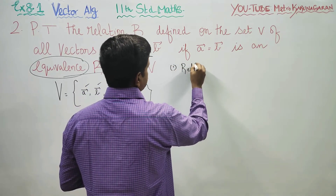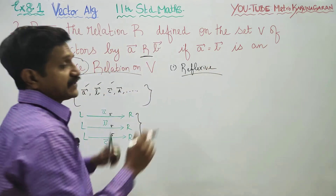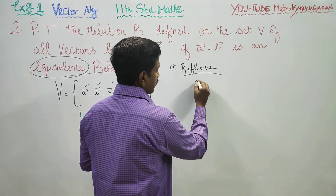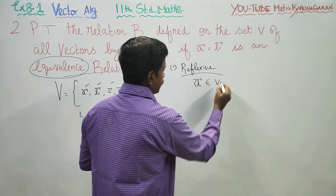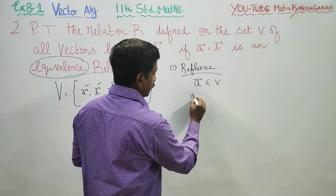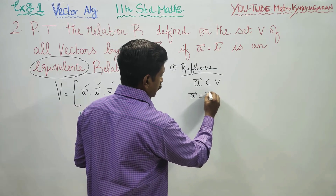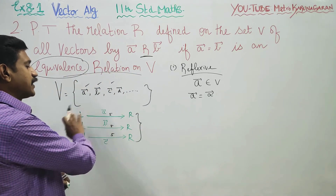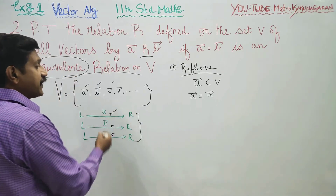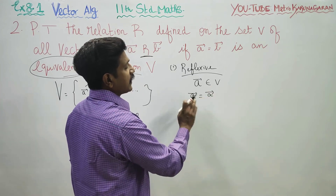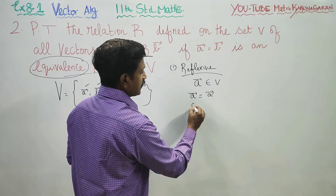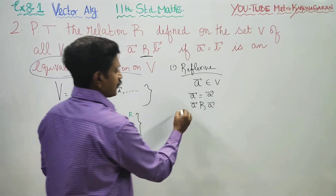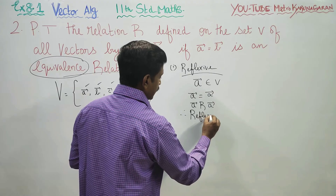What is the meaning of reflexive relation? The reflexive condition requires that A vector must be related to itself. A vector belongs to V. A vector is always equal to A vector because it has the same direction (left to right) and the same length (5). Therefore, A vector is related to A vector, so reflexive is true.